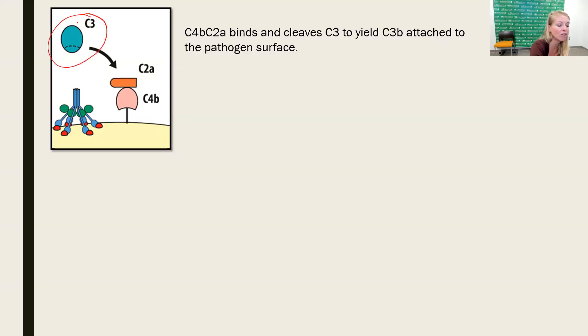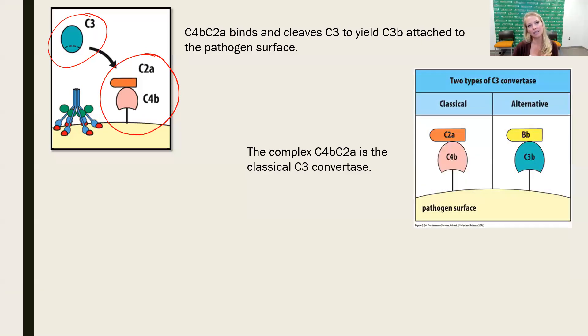C4B2A will then be the protein group that will cleave C3. Remember when we looked at that table that showed how all three pathways of complement activation coalesce on the cleavage of C3, this is where it happens. Because C4B2A is the molecule that does the cleavage of C3, it is called the C3 convertase, but we call it the classical pathway C3 convertase or the classical C3 convertase.